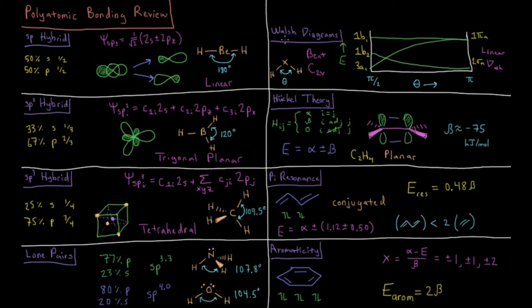We then move on to Walsh diagrams, which show the change in energy of individual orbitals versus a particular intermolecular coordinate. In this case, I have a molecule with two hydrogens and a central atom, and I'm plotting the orbitals versus the change in this bond angle.